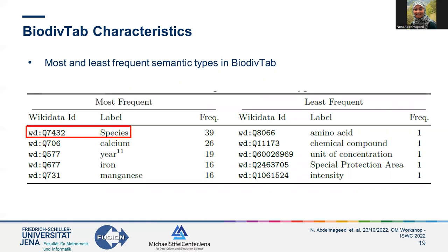This table shows the most and least frequent types in BiodivTab. The most frequent type is species, reflecting its importance in the biodiversity domain, followed by calcium. The least common types include intensity and special protection area.